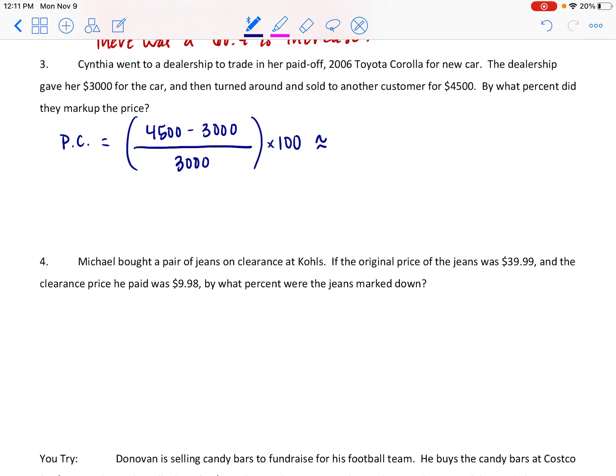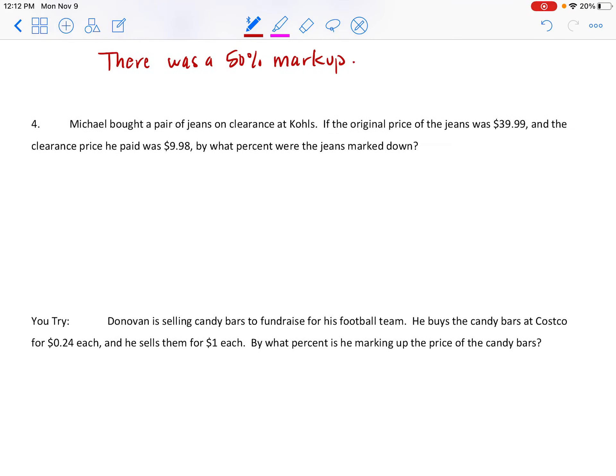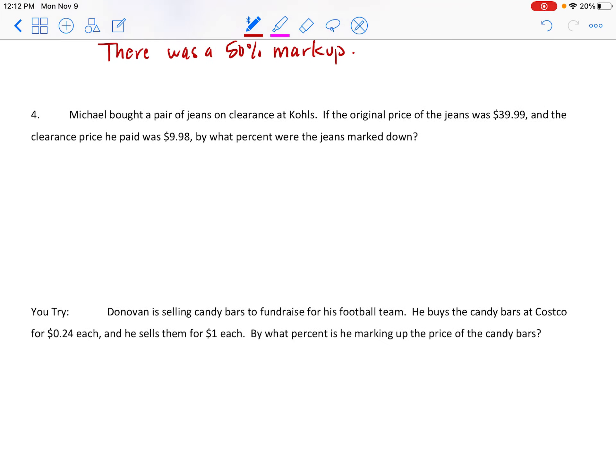We've got marked up to 4,500 from 3000, and that's all going to be divided by that initial 3000, and then we're going to multiply by a hundred, and we get 50 percent. So a 50 percent markup. The one time I remember to put approximate, this was exact. So we can say there was a 50 percent markup. And the markup is basically saying the same thing as an increase in the price. So the markup takes the place of the word increase.